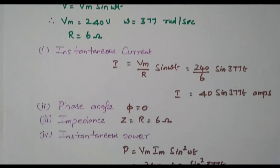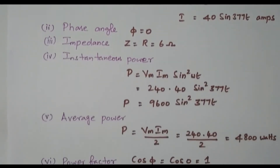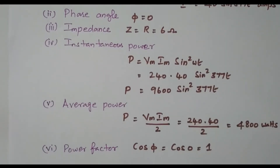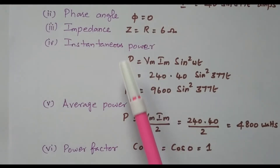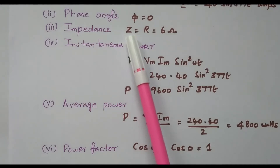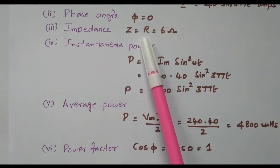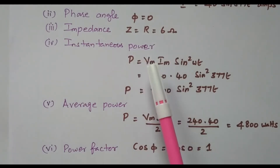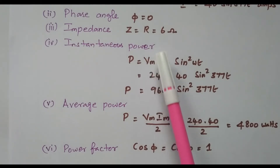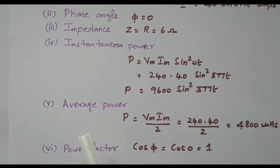Next, the phase angle. For a resistive circuit, the phase angle is 0 — there is no phase difference. The current and voltage are in phase. Then, impedance: since only a resistor is available, impedance is 6 ohm. If capacitive or inductive elements were present, we would need to add them.